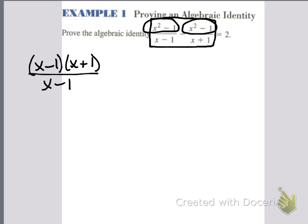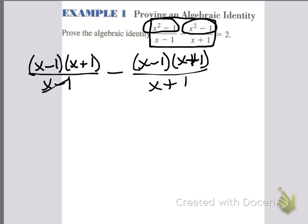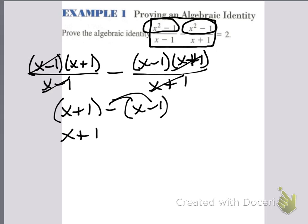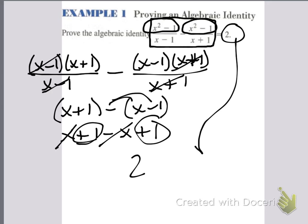So let's factor: (x minus 1)(x plus 1) over... okay, now what happens? The (x minus 1)s cancel out there, the (x plus 1)s cancel out there. What's left is x plus 1 minus x minus 1. If you take the negative sign and distribute, you have x plus 1 minus x plus 1. The x minus x cross out, you have plus 1 plus 1, which is 2 — which is exactly what is on the right-hand side.